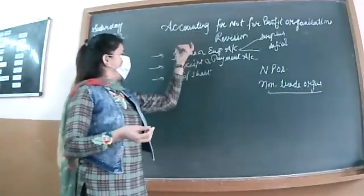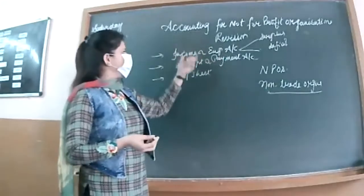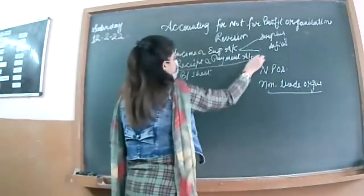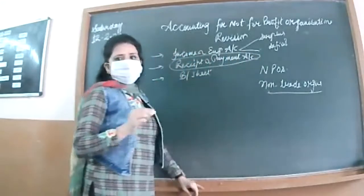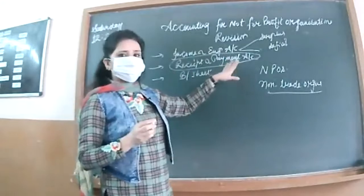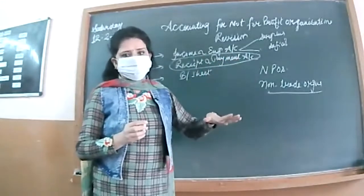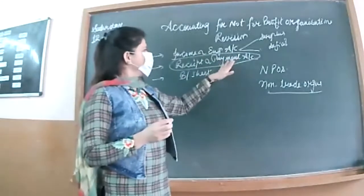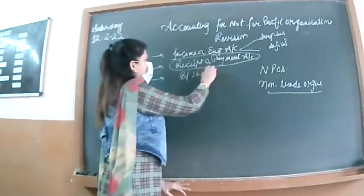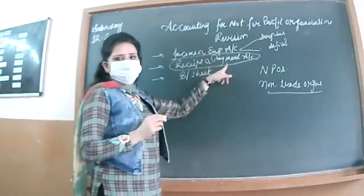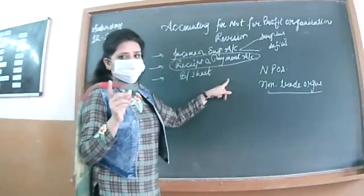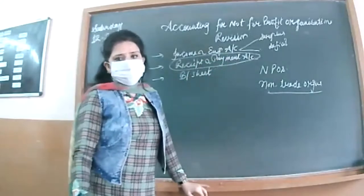When we talk about the accounting books or ledger accounts which they will be preparing, we have the Receipt and Payment Account. That means your organization's cashbook is not made — they prepare the Receipt and Payment Account, which is the same as your cashbook. All interests related to cash and bank are put into this account. In the paper, the Receipt and Payment Account will be given as a five-mark question with few adjustments, and he will ask you to prepare the Income and Expenditure Account.